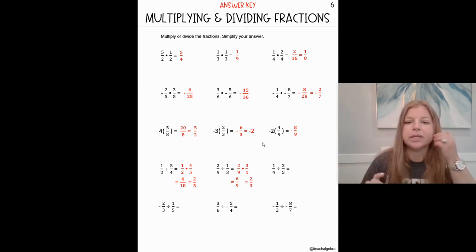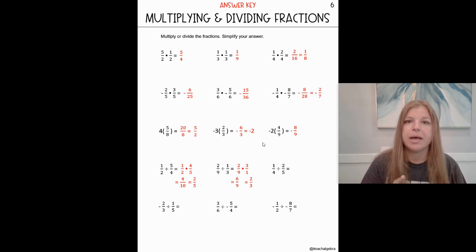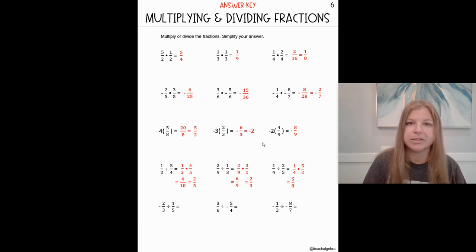Next one: one fourth divided by two fifths. We multiply the first fraction, one fourth, by the reciprocal of the second fraction. The reciprocal of two fifths would be five halves. We multiply straight across: one times five is five, four times two is eight. So our answer is five eighths.